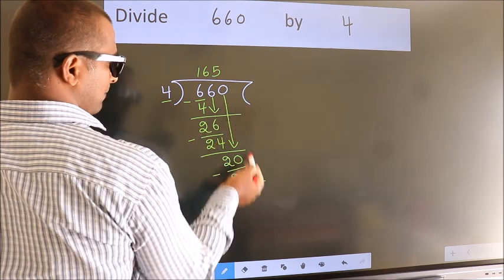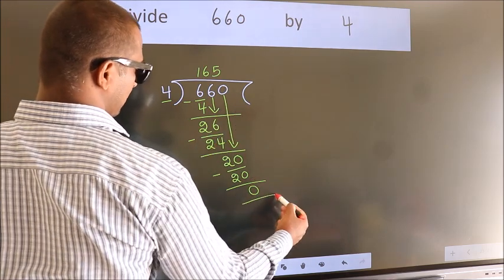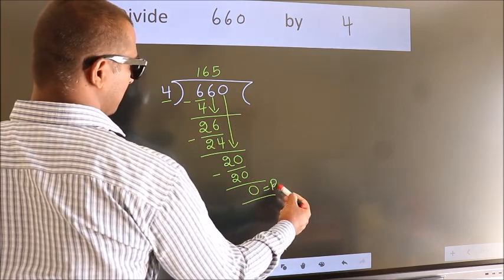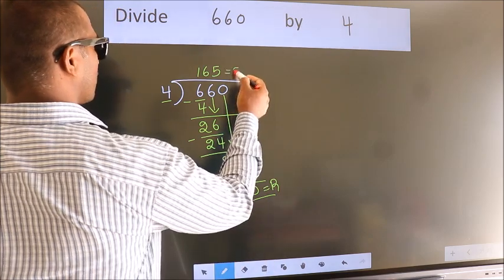No more numbers to bring it down. So, we stop here. This is our remainder. This is our quotient.